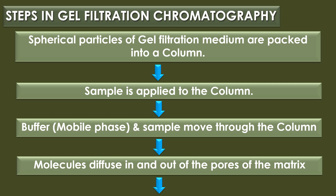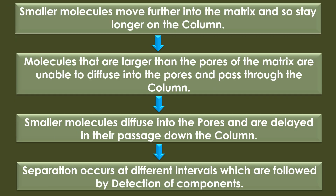In the steps of gel filtration chromatography: spherical gel filtration medium particles are packed into the column and the sample is applied. Buffer or mobile phase and samples move through the column, and molecules diffuse in and out of the pores of the matrix — the partitioning of samples between the mobile and stationary phases. Smaller molecules move further into the matrix and stay longer on the column, while larger molecules unable to enter the pores pass through more quickly. Separation occurs at different intervals, followed by detection of compounds.